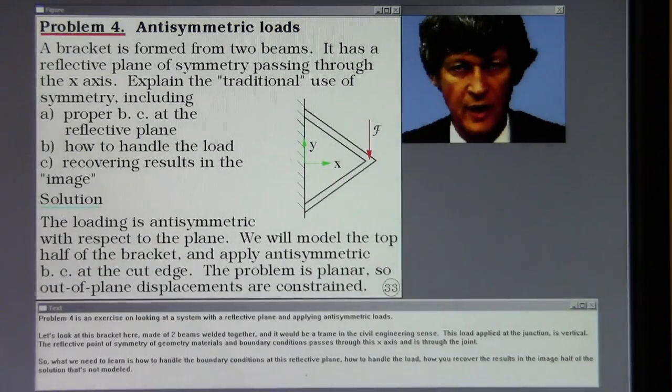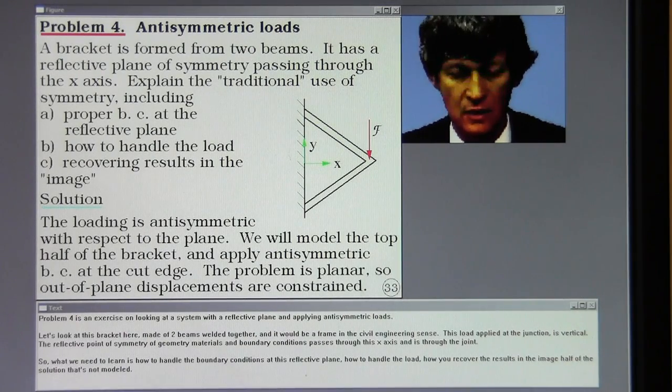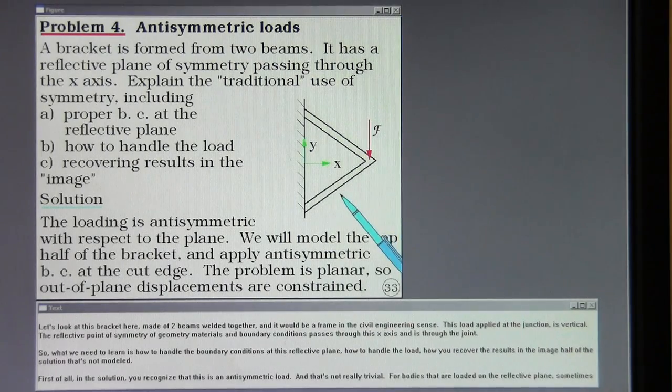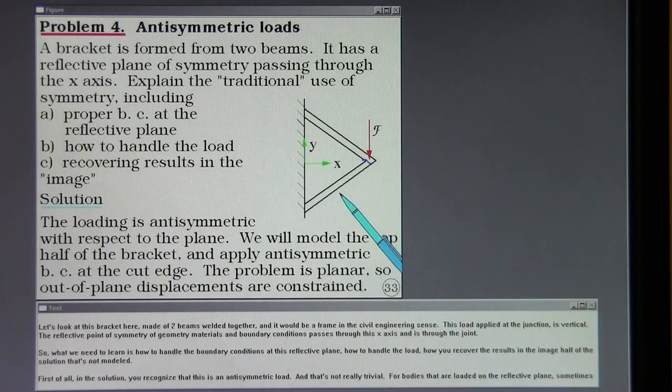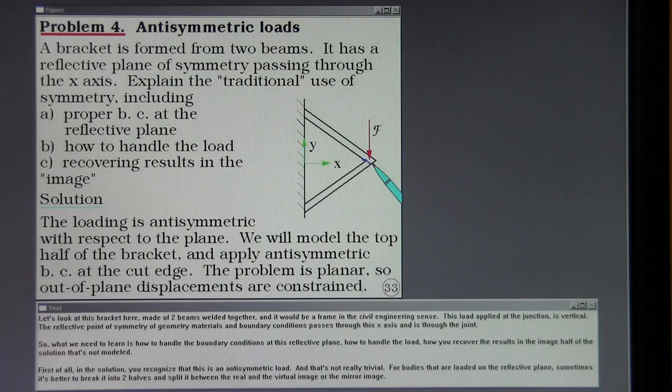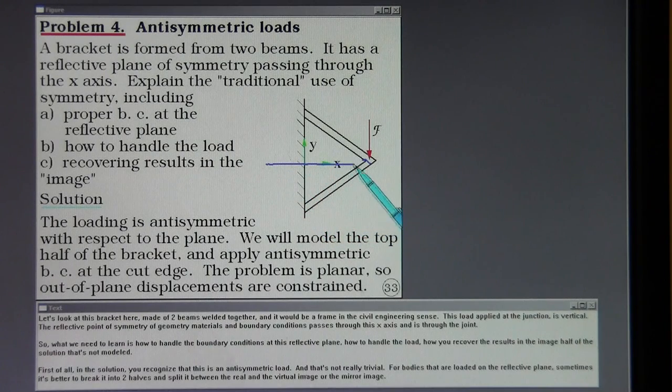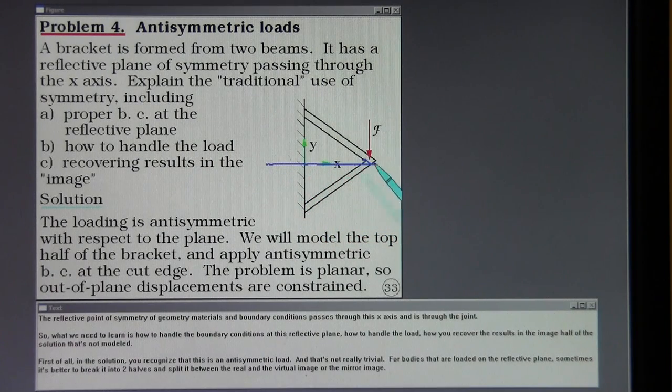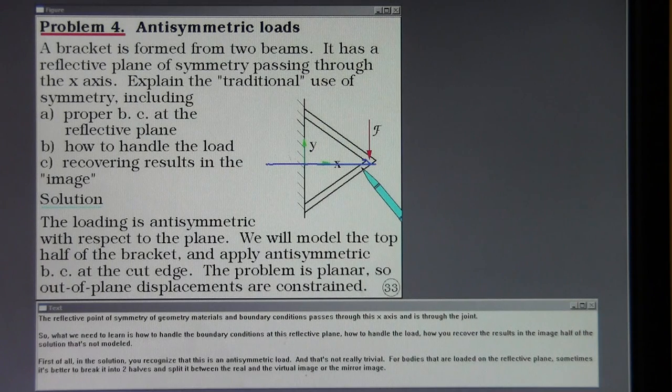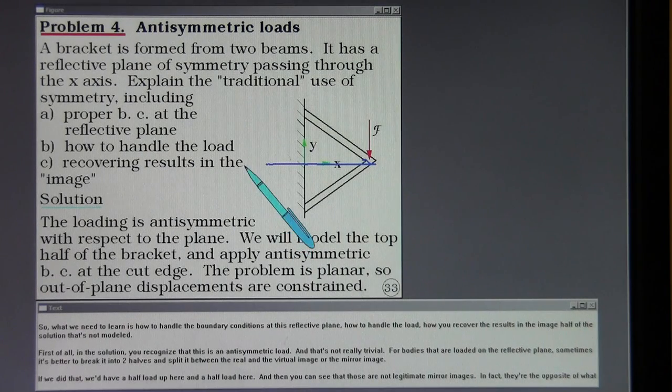Problem four is an exercise on looking at a system with a reflective plane and applying anti-symmetric loads. Let's look at this bracket here made of two beams welded together and it would be a frame in the civil engineering sense. This load applied at the junction is vertical. The reflective plane of symmetry of geometry materials and boundary conditions passes through this x-axis and is through the joint. So what we need to learn is how to handle the boundary conditions at this reflective plane, how to handle the load, how you recover the results in the image half of the solution that's not modeled.